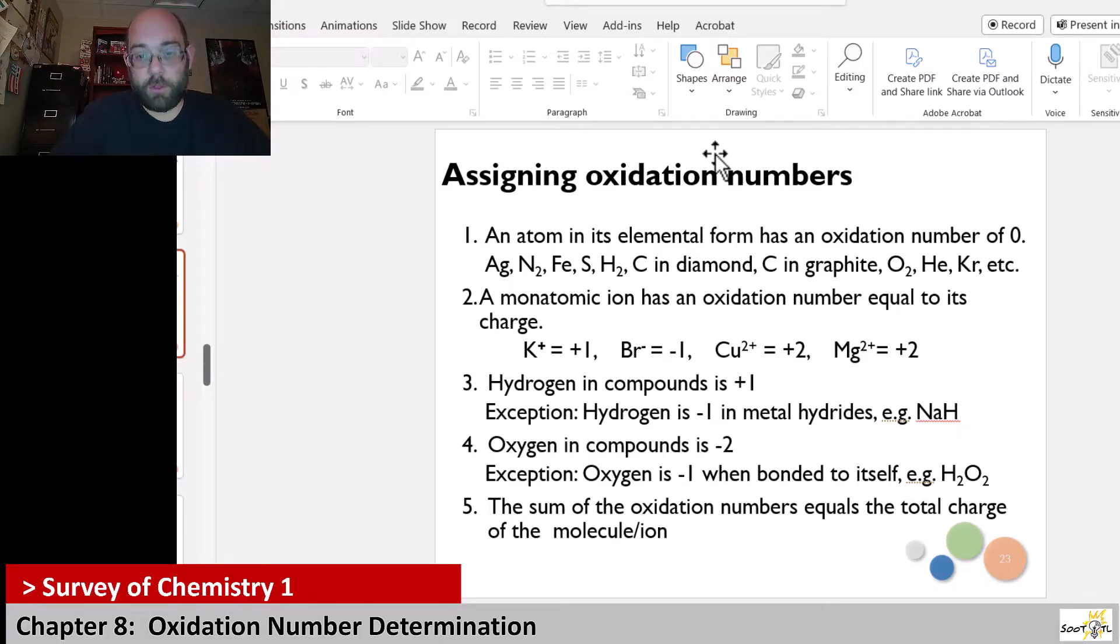There is one exception where they have an oxidation number of negative one, and that's when the hydrogen is actually paired with a metal. That arises from electronegativity. Hydrogen is more electronegative than most of the metals.